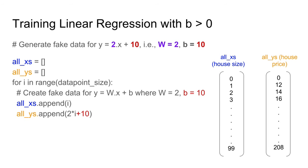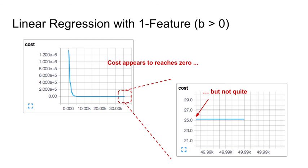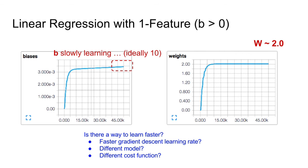What if we change the value of b? Instead of y equals 2x, we make it y equals 2x plus 10, such that b equals 10. We generate x from 0 to 99 to create 100 data points and the corresponding y as 2x plus 10. Training shows the cost appears to reach zero, but zooming in reveals it is not quite zero — the cost axis is very large. B is still slowly learning and has not reached the ideal value of 10, while w has reached the ideal value of 2. This raises questions: is there a faster way to learn b — a faster gradient descent learning rate, a different model, or a different cost function?